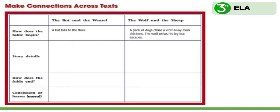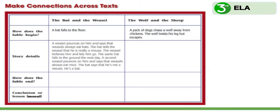Let's remember some of the story details from The Bat and the Weasel. A weasel pounces on the bat and says that weasels always eat bats. The bat tells the weasel that he is really a mouse, and the weasel believes him and lets him go. The same bat falls to the ground the next day, and a second weasel pounces on him and says that weasels always eat mice. The bat says that he's not a mouse, he's a bat.